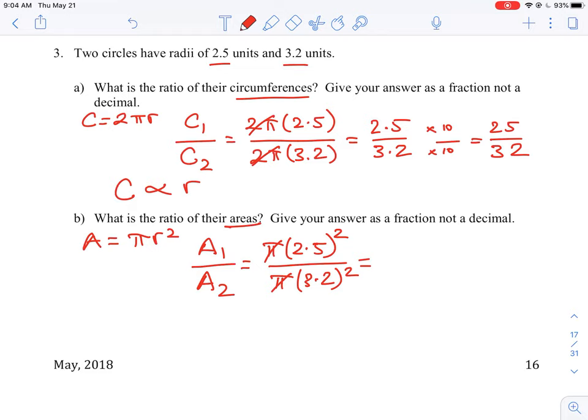And when we square this, 2.5, if you multiply it out, you should get something close to 6.25 and 3.2 is 10.24. Now again, how do we calculate the ratio for this? We want a fraction, so we have decimals here.